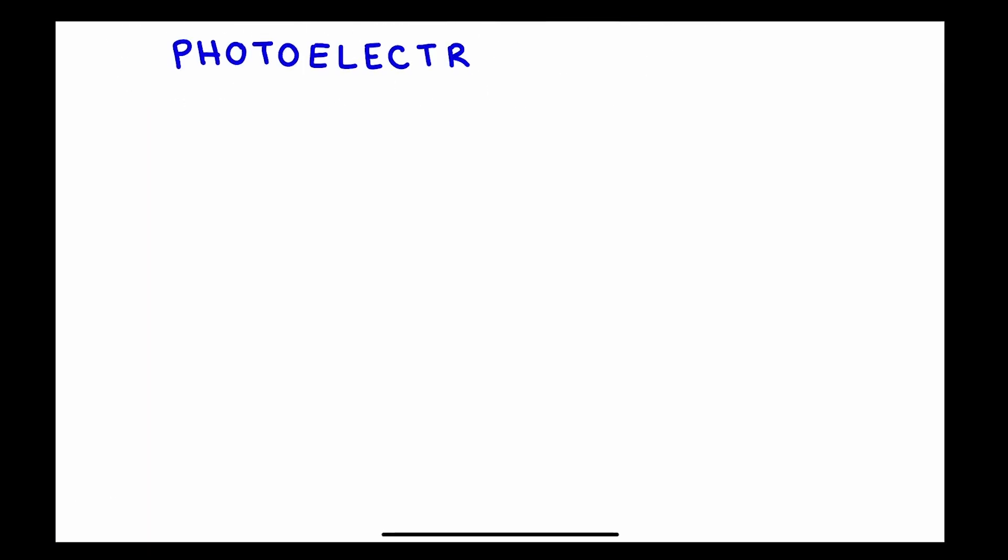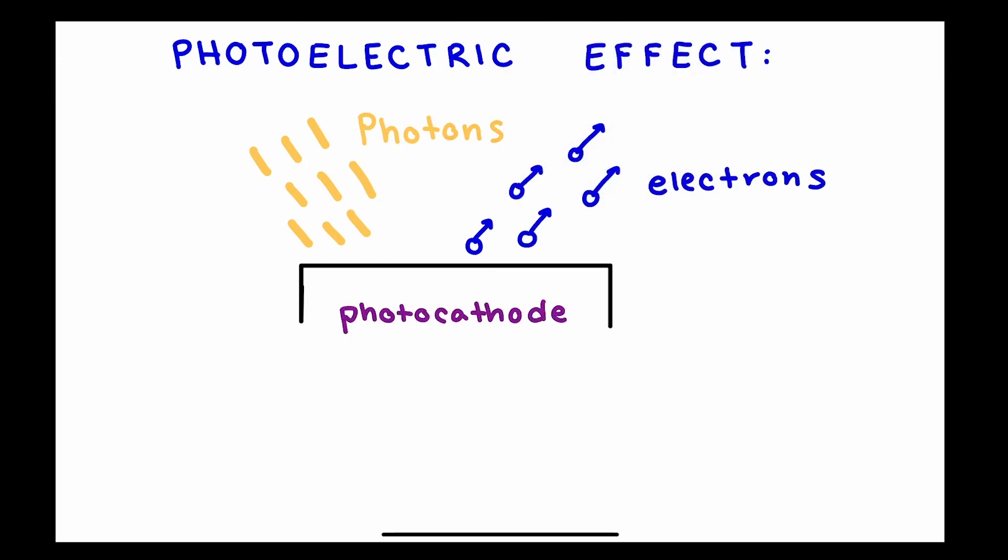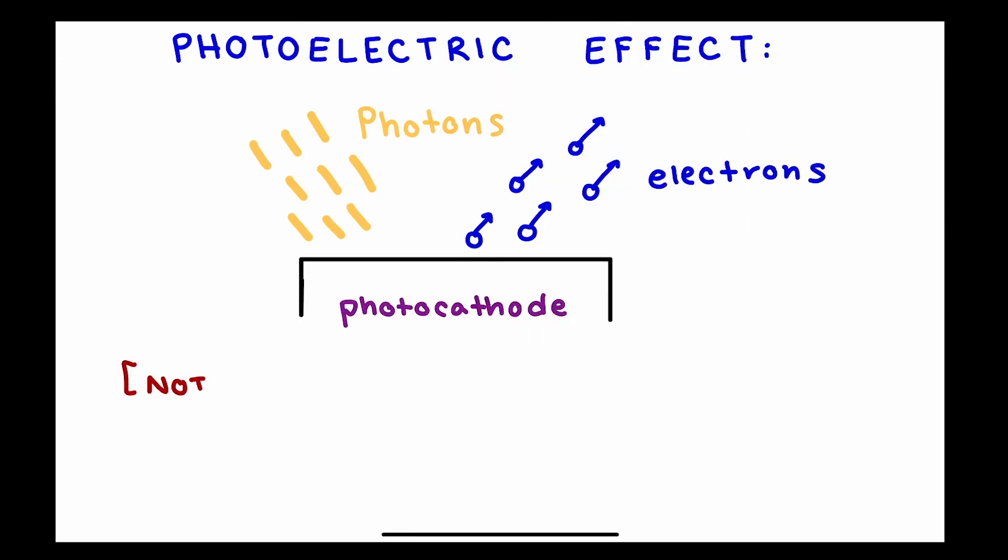The photoelectric effect was discovered by Einstein, and he got his Nobel Prize for it. It's where we take a material and shine light or photons on it, and those photons eject electrons. We call this surface a photocathode. Just note that not all materials can do this, and some do it better than others.